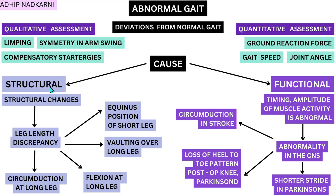The first cause is structural, where structural changes are seen in the body — for example, leg length discrepancy, where one leg is shorter or longer than the other. The second cause is functional, where the timing or amplitude of muscle activity is abnormal, which can result from various reasons such as an abnormality in the central nervous system.